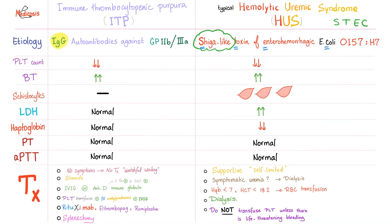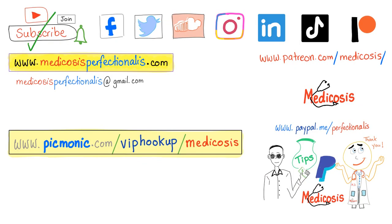Treatment of HUS is supportive. Most cases are self-limited — you support the patient with fluids and electrolytes. For symptomatic uremia, go with dialysis. If hemoglobin and hematocrit are low, give RBCs. If kidney failure is really bad, dialysis. Do not give platelets. Do not give antibiotics.